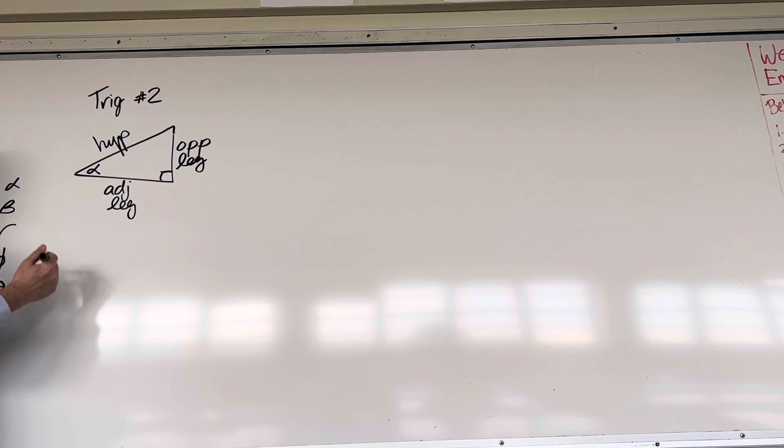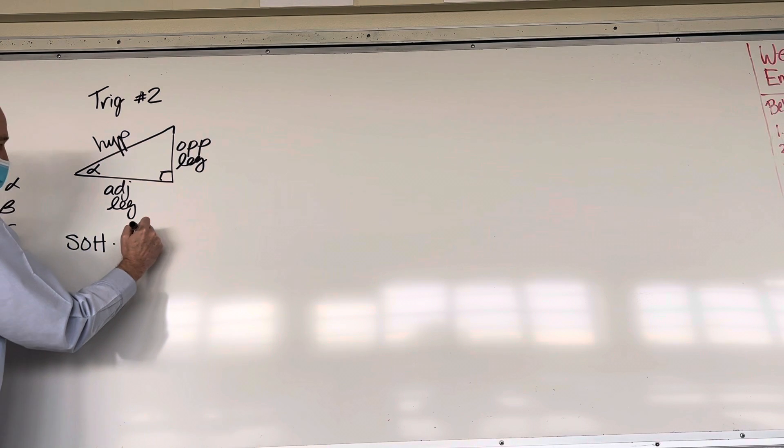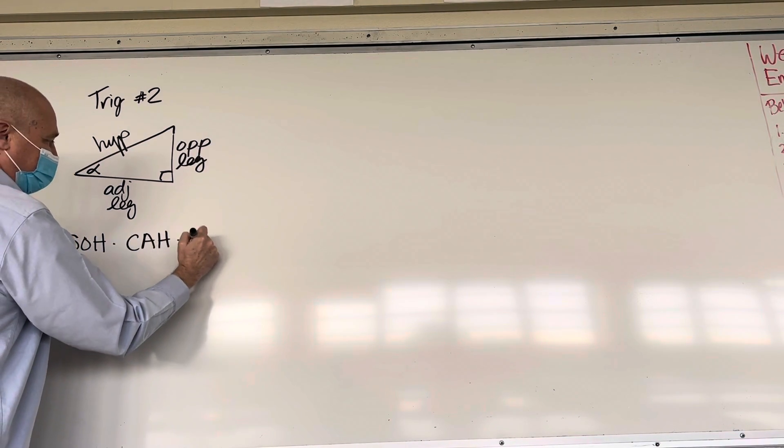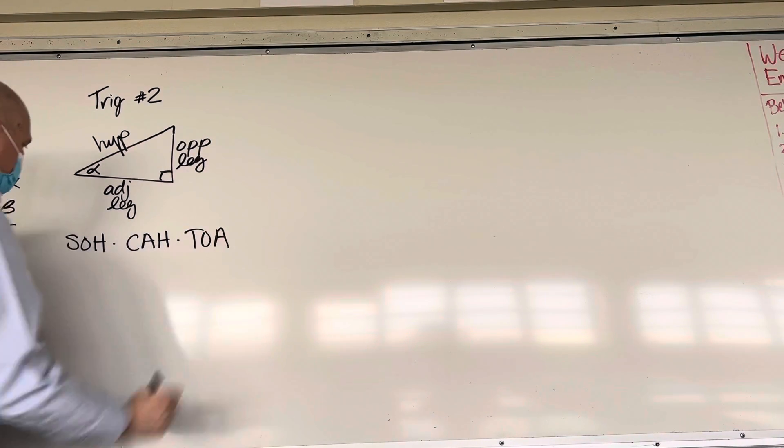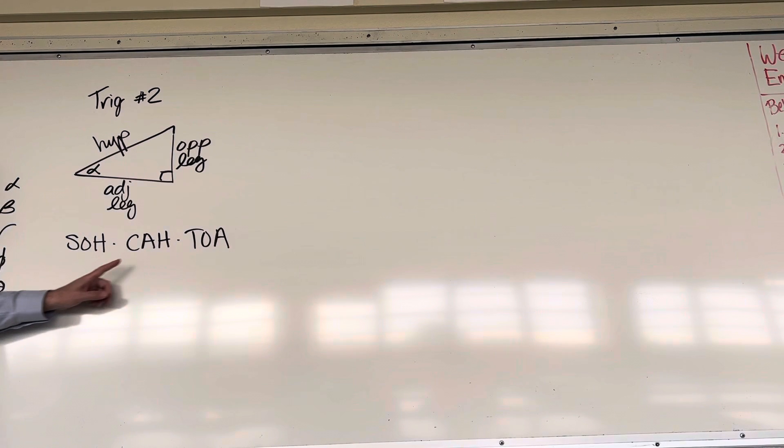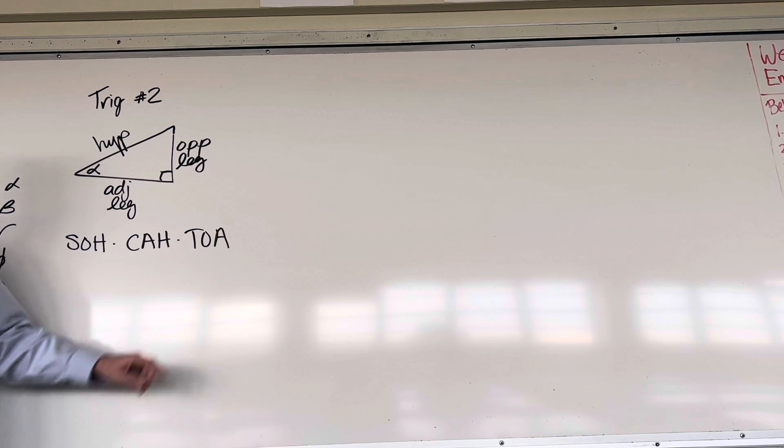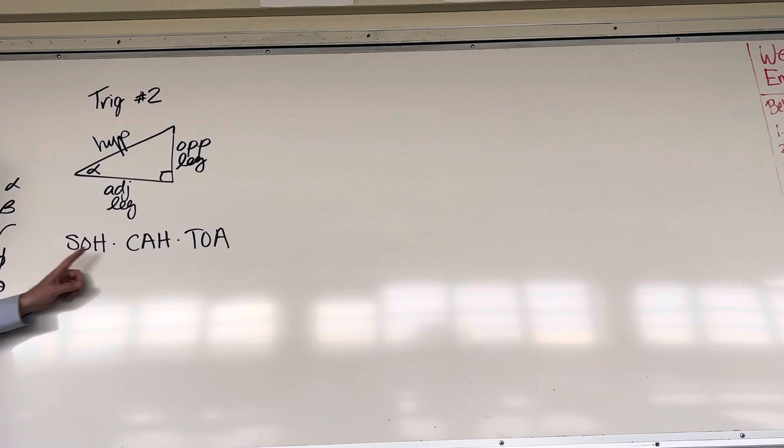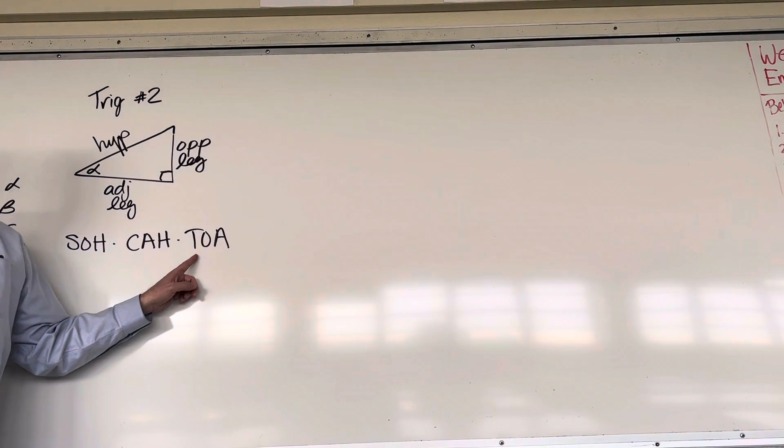Then we get back to our first trig function, which comes from this acronym. SOH-CAH-TOA. Sohcahtoa. This is your secret code to remember the three trig functions. This is going to be sine. This is going to be cosine. And this is going to be tangent. On your calculator, it is abbreviated sin, which stands for sine, cos, which stands for cosine, and tan, which stands for tangent.